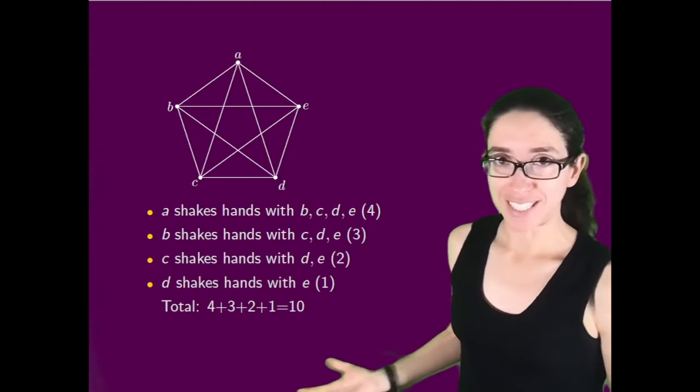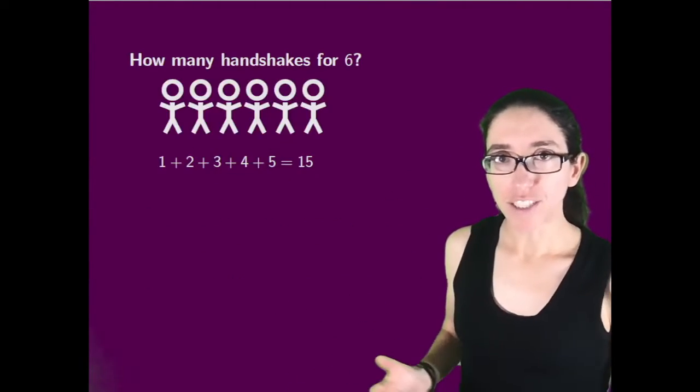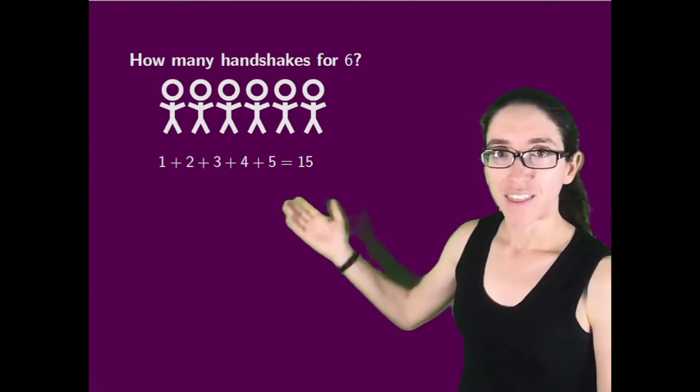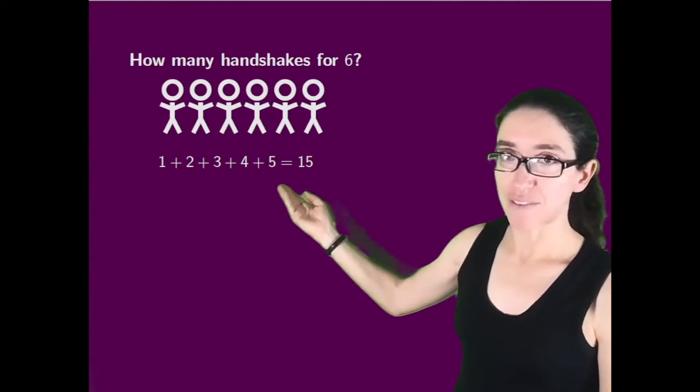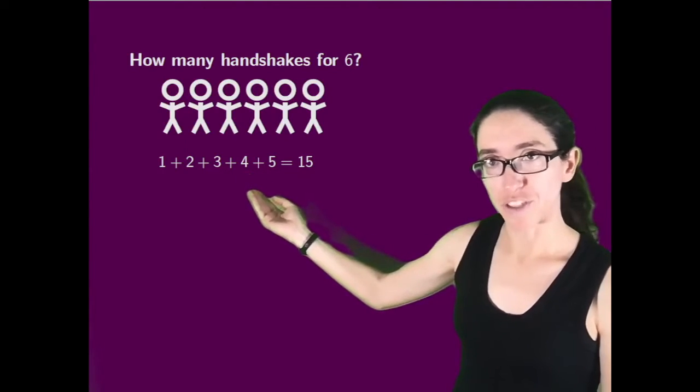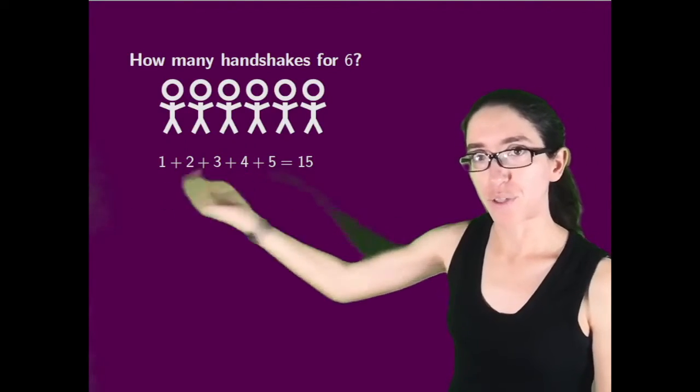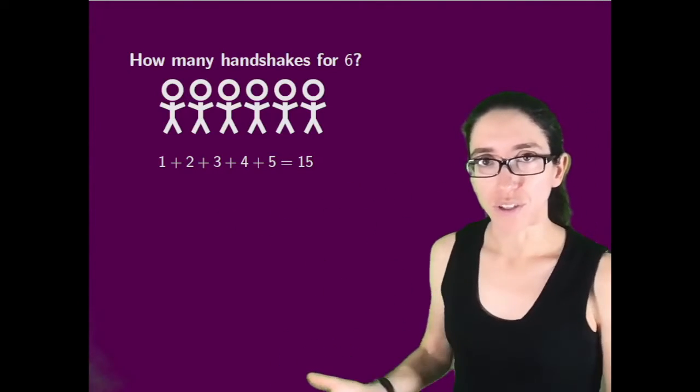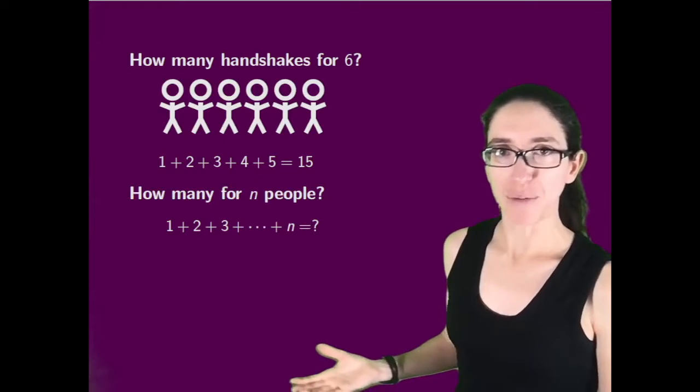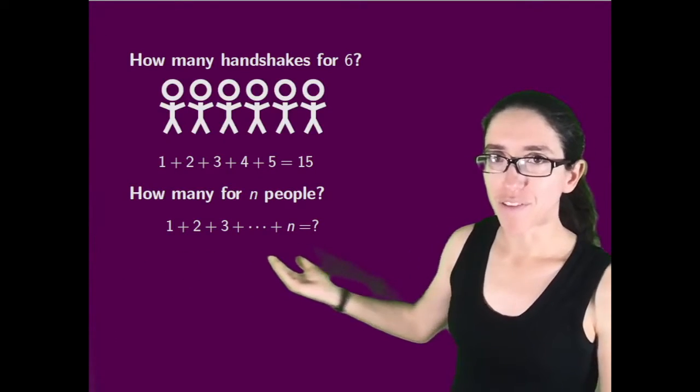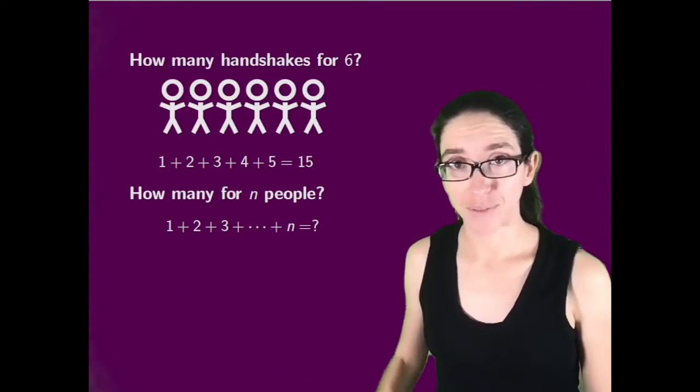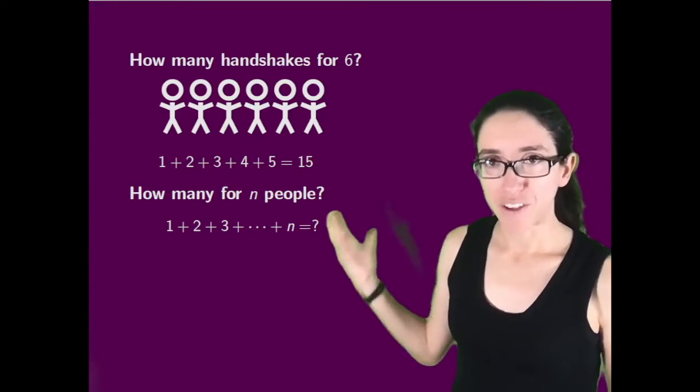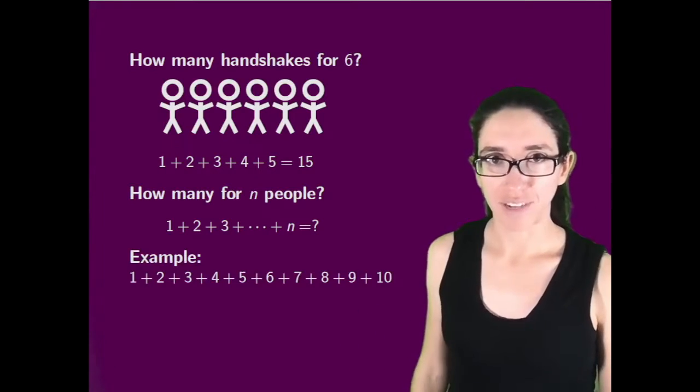Let's generalize this. By the same logic, if there are six people in a room, the first person shakes hands with five other people. The second person has four more people to shake hands with, then three, then two, then one. So we add up the numbers from one to five, and that's fifteen. In general, how many handshakes for n people? It's the sum of all the numbers from one up to n. We'd like a formula for this sum.